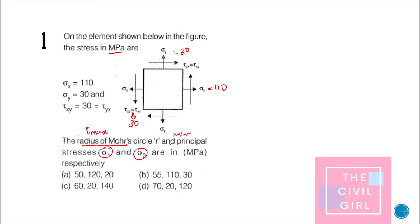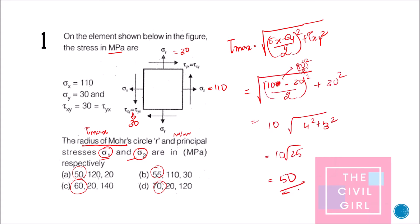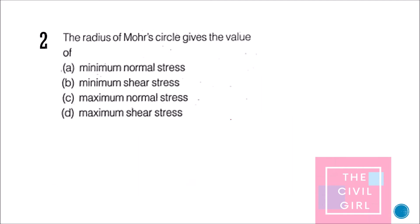Looking at the options, the values for tau max differ for every option, so you can find the radius of the Mohr's circle alone to find the answer — you don't need to find sigma 1 and sigma 2. Applying the formula for tau max and substituting the values, you get 50. So the answer is option A.